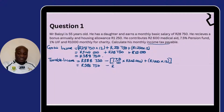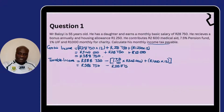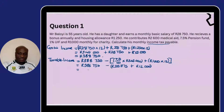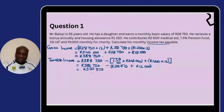When we calculate 7.5% of R345,000, we get R25,875. So our taxable income is R388,750 minus R25,875 minus R12,000 (in the bracket). When we solve that, our taxable income is R350,875.